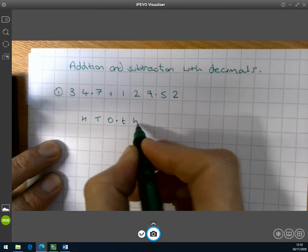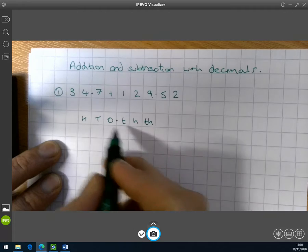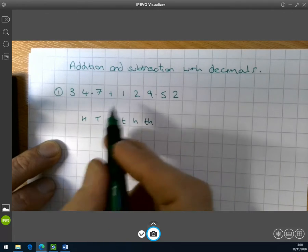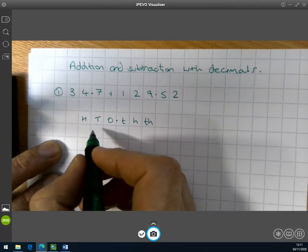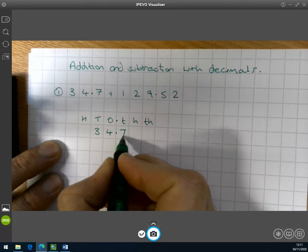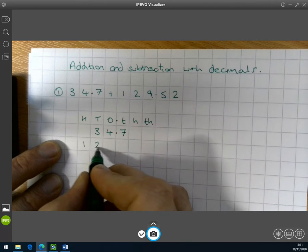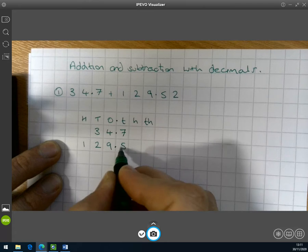And we've got a little t for tenth, hundredth, thousandth. And obviously we're going to extend these in either direction, but we're going to need these for this question. So we've got 34.7 and 129.52.